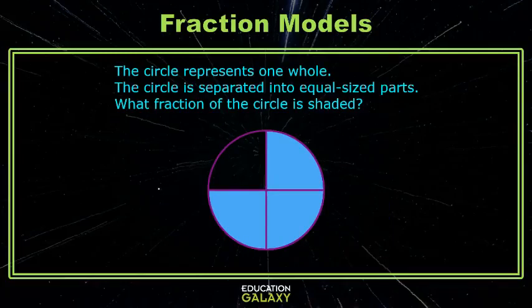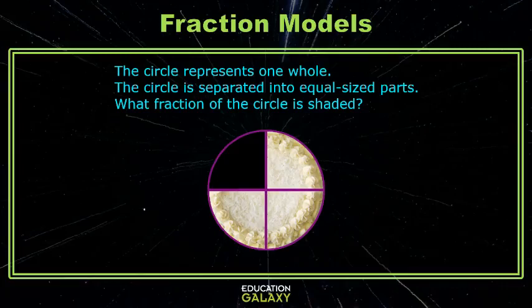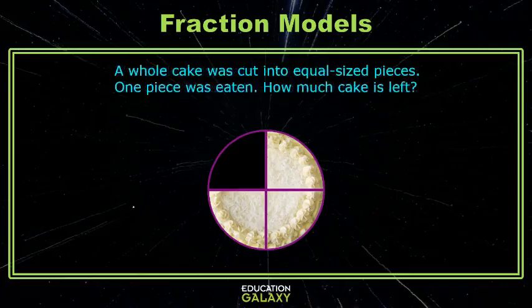Okay, now here's a circle. It represents a whole. It's cut into equal-sized parts, and we're asked about the shaded parts. But you know I would like this circle better if it was a whole cake. Now we'll just chop that into equal parts. Well, now we have to change the question. A whole cake was cut into equal-sized pieces. One piece was eaten. How much cake is left?